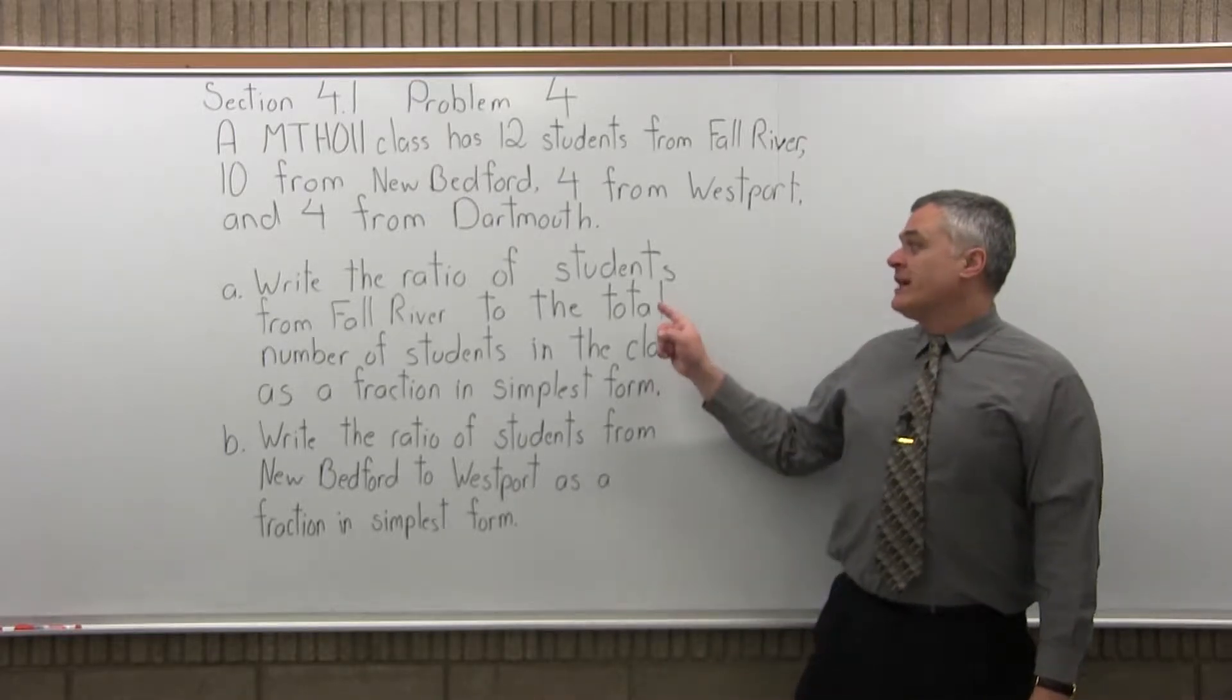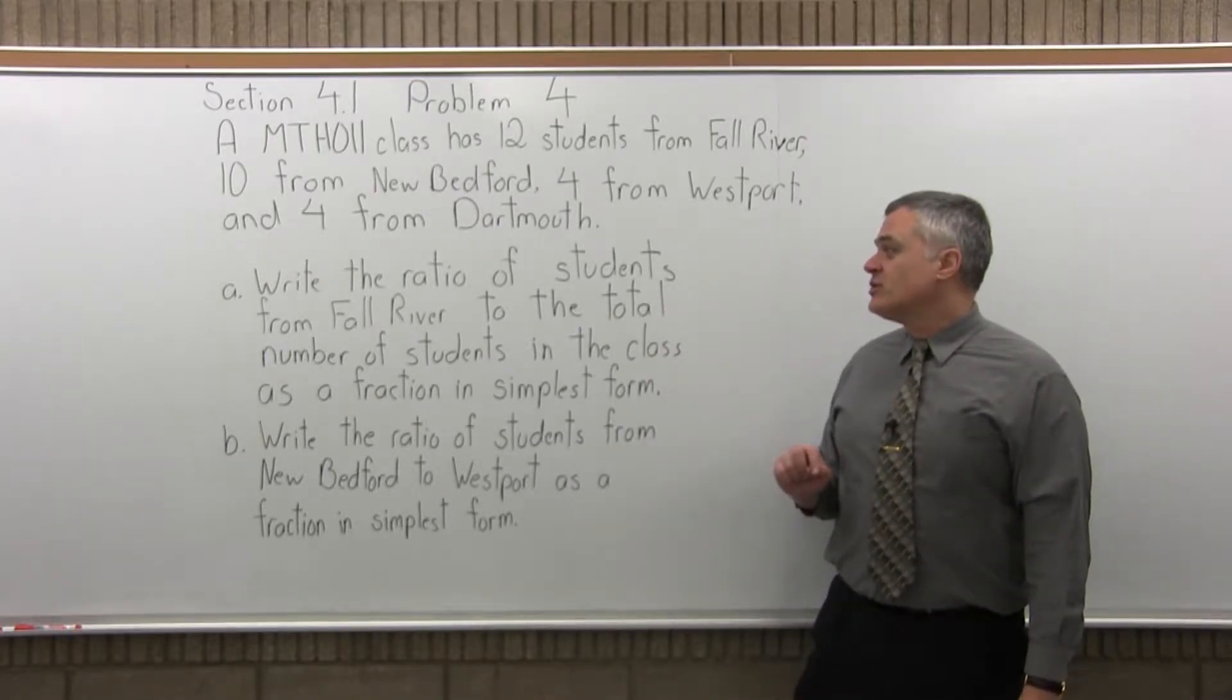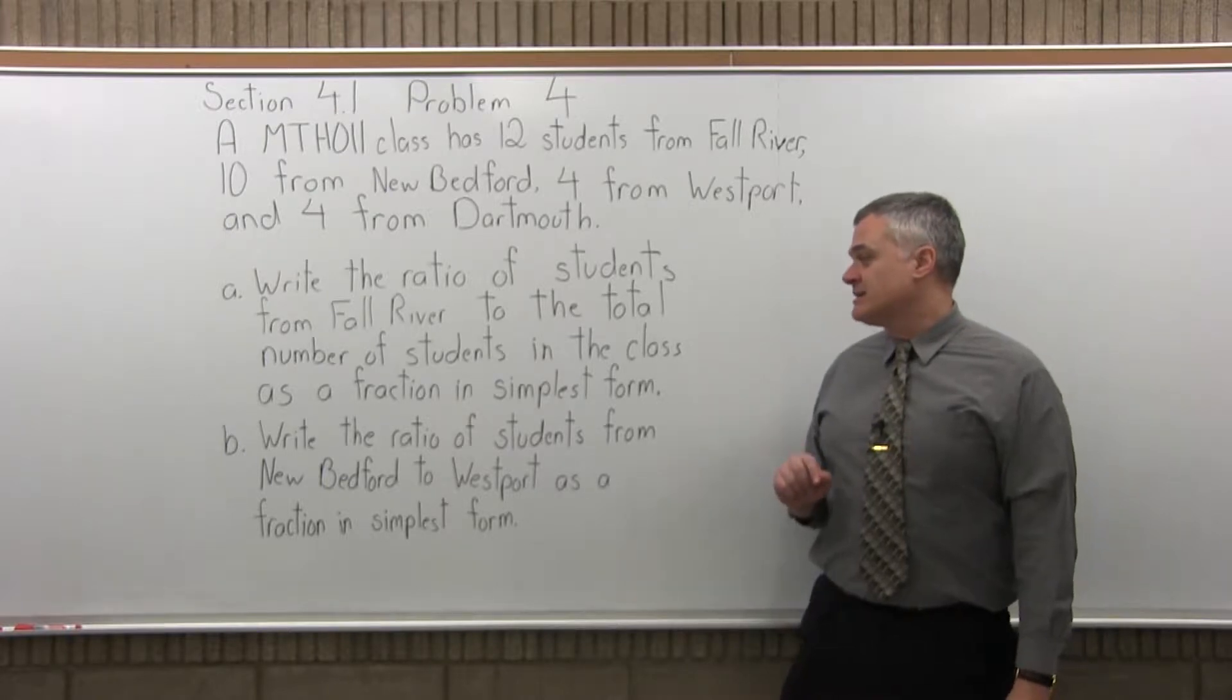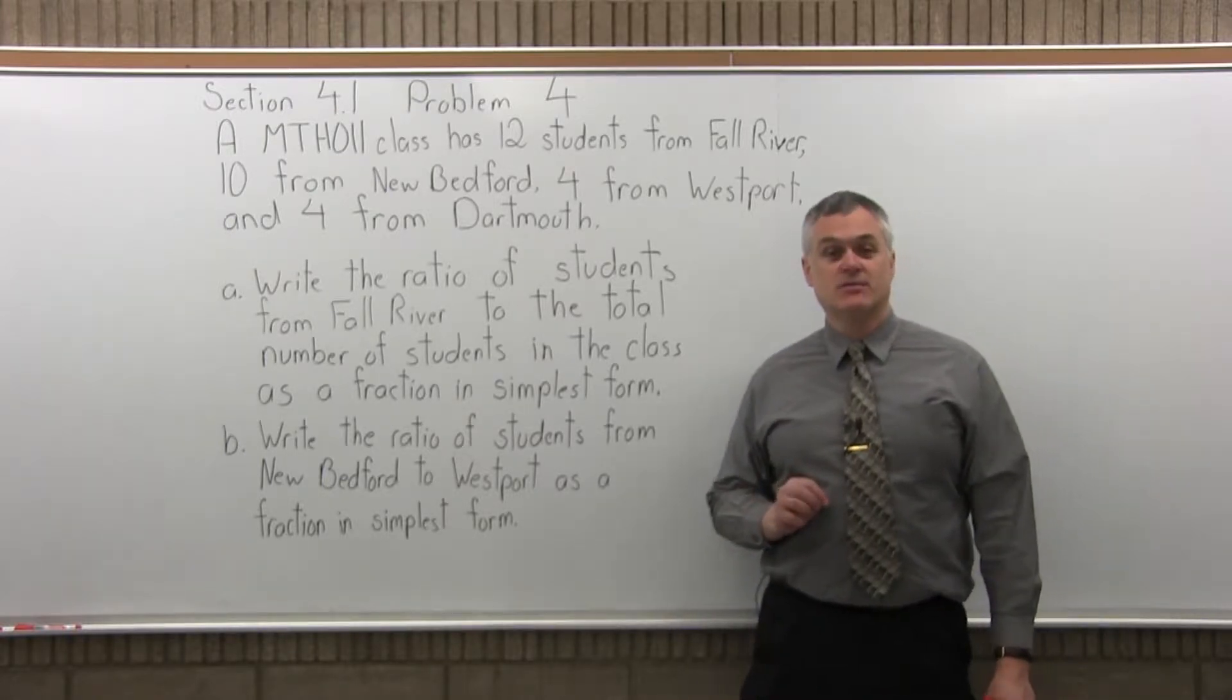It says write the ratio of students from Fall River to the total number of students in the class as a fraction in simplest form.